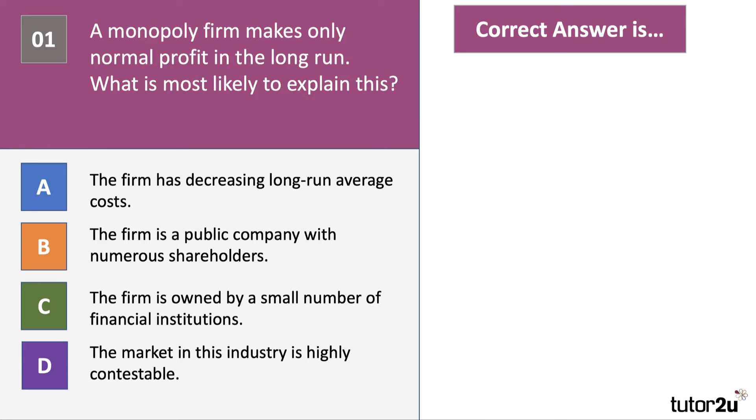Question 1. A monopoly firm makes only normal profit in the long run. What is most likely to explain this? There are your four options A, B, C and D. Have a go please. Press the pause button and have a go at question number 1.